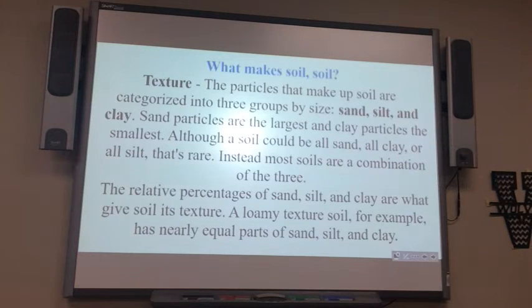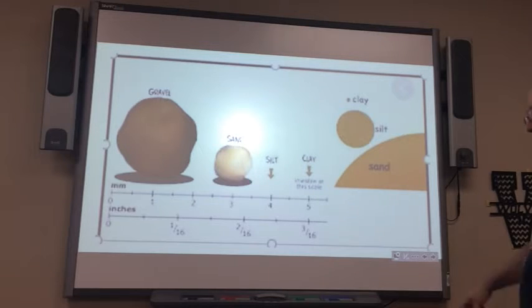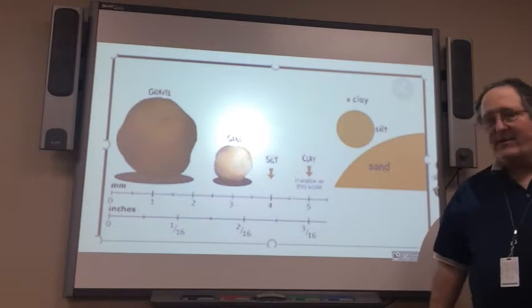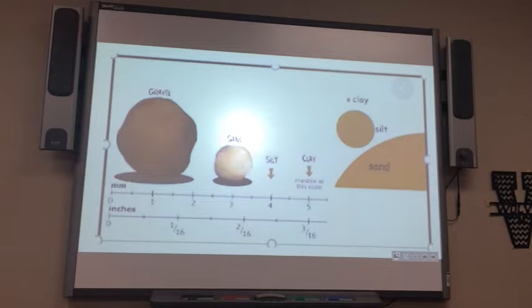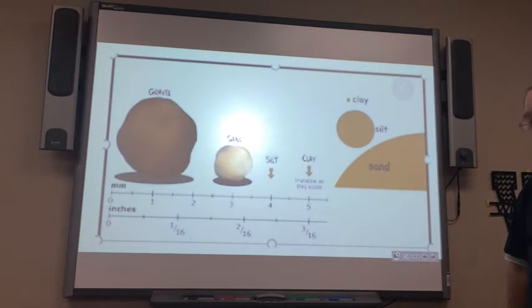Sand particles... and it just basically said the same thing. Most soils are a combination of the three. Sand is the biggest one we have, about 1/32nd of an inch, which is really, really small. Silt, about there. It's really, really small. And clay, you can't really see it on this scale.